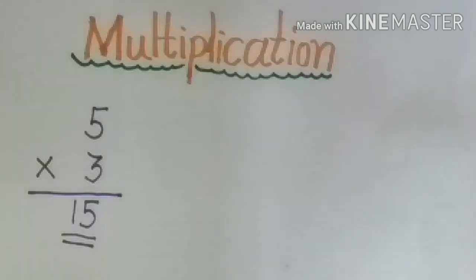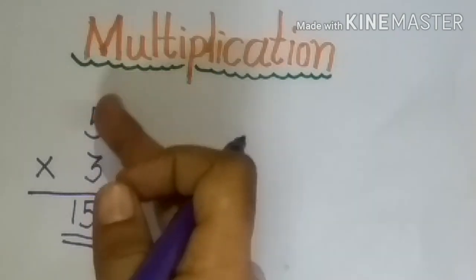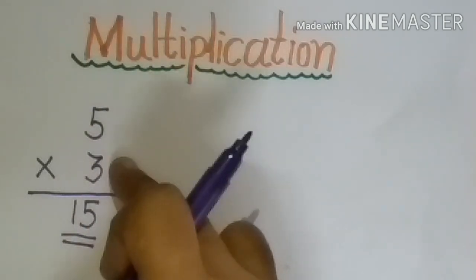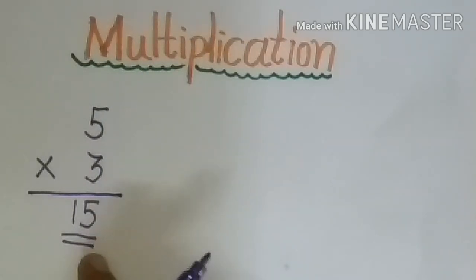If you say 5's table till 3, at that time also the answer will be the same. For example, five threes are 15 and three fives are 15.